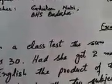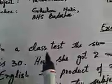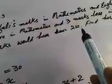The question is a word problem. In a class test, the sum of Shifali's marks in Mathematics and English is 30. Had she got two marks more in Mathematics and three marks less in English, the product of their marks would have been 210. Find her marks in the two subjects.